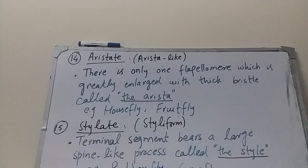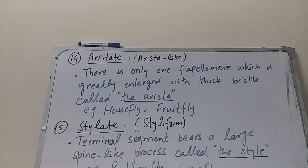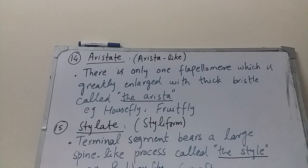The next type is aristate antenna. Aristate means arista-like. There is only one flagellomere, which is greatly enlarged, with a thick bristle called the arista. In aristate antennae, the flagellum has only one segment — greatly enlarged — bearing a thick, hairy bristle known as the arista. Aristate antennae are found in house flies and fruit flies, of order Diptera.